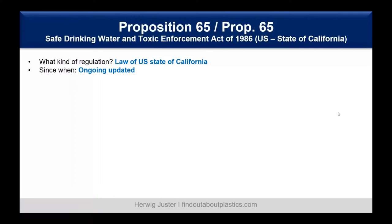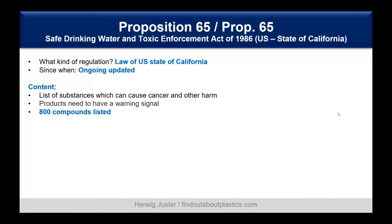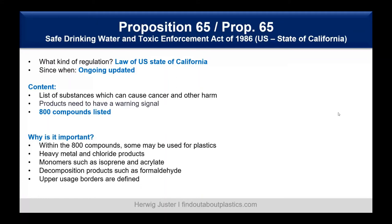At the state level, California has Proposition 65, called the Safe Drinking Water and Toxic Enforcement Act of 1986. It is a law of the U.S. state of California. The population wanted to know which substances can cause cancer or other harm, so the government created a list of substances indicating cancer or other harmful effects. If a product contains such a substance, it needs to be labeled with a warning signal. There are already over 800 compounds listed.